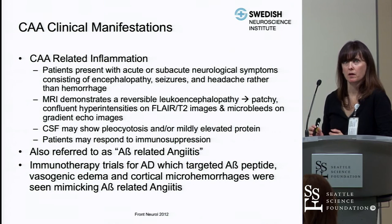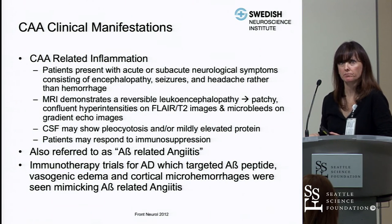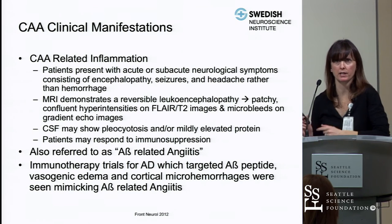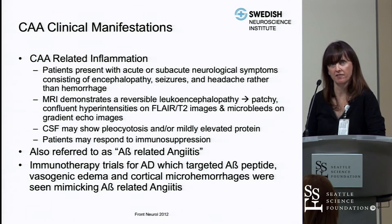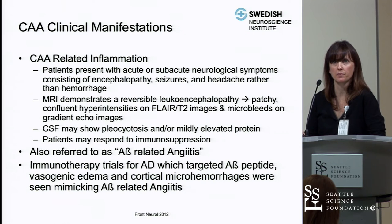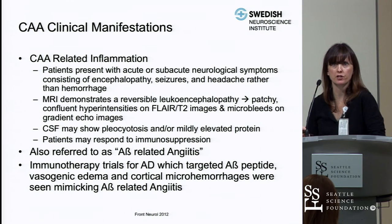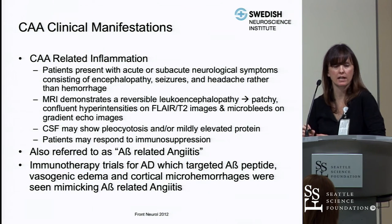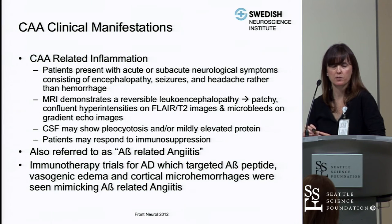There are other clinical manifestations of cerebral amyloid angiopathy. CAA-related inflammation is well-described in the literature: rather than hemorrhage, patients present with acute or subacute neurological symptoms including encephalopathy, seizures, and headache. MRI shows leukoencephalopathy with patchy and confluent areas of hyperintensity on FLAIR and T2, plus microbleeds on gradient echo. CSF can show pleocytosis and mildly elevated protein. These patients can respond to immunosuppression, and scans may look like PRES — posterior reversible leukoencephalopathy syndrome.